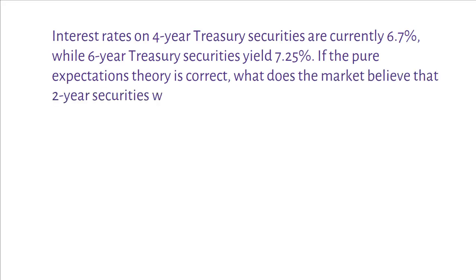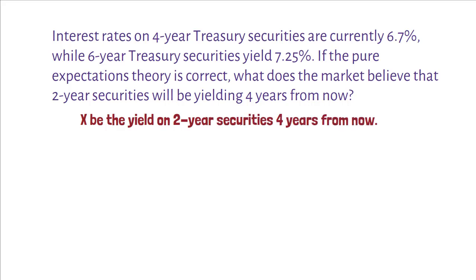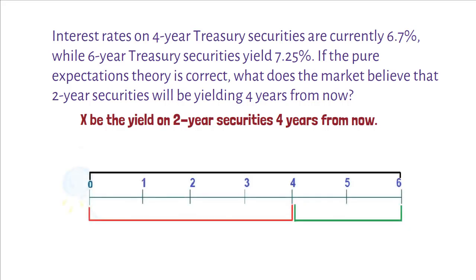If the pure expectation theory is correct, what does the market believe that 2-year securities will be yielding 4 years from now? To solve this question, we assume X equals the yield on 2-year Treasury securities 4 years from now. Let's draw a timeline to understand the problem better.